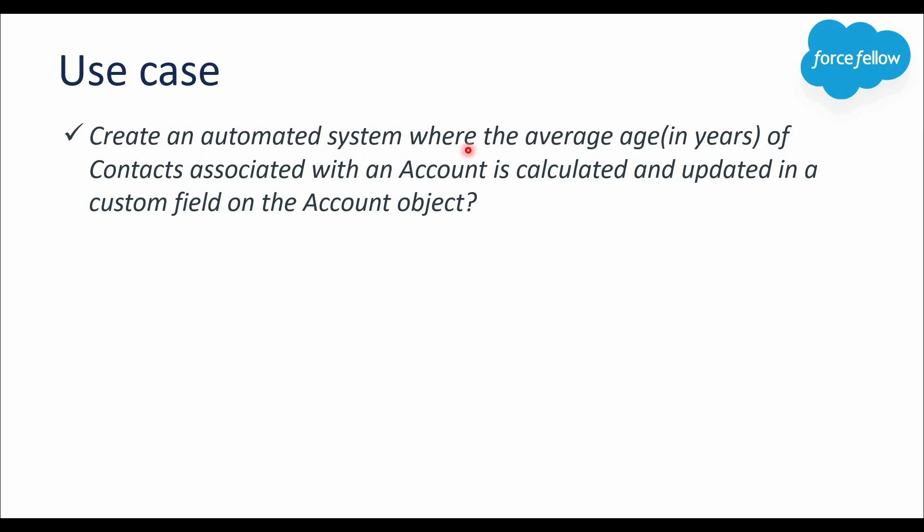The use case is: create an automated system where the average age of contacts associated with an account is calculated and updated in a custom field on the Account object. We need to build a functionality that will calculate the average age of all the contacts which belong to an account — only those contacts which are child of that account — and then update that average age into a custom field on the Account object.